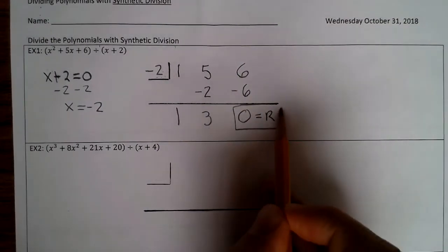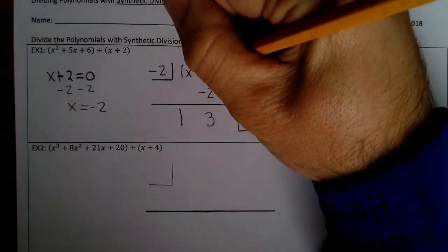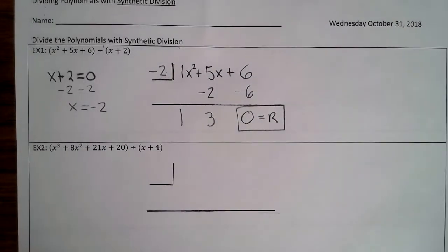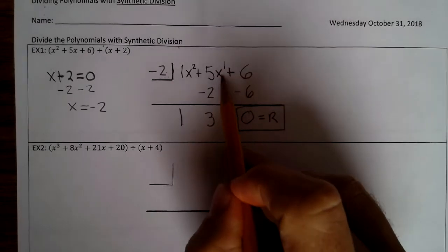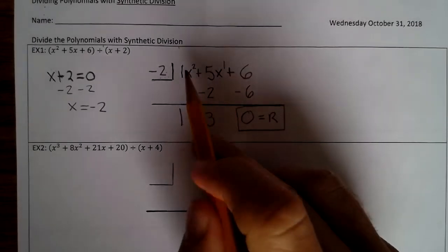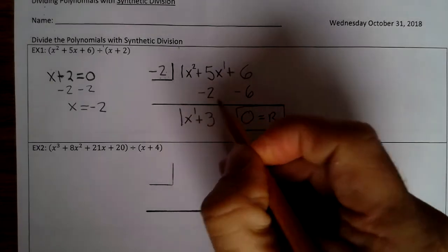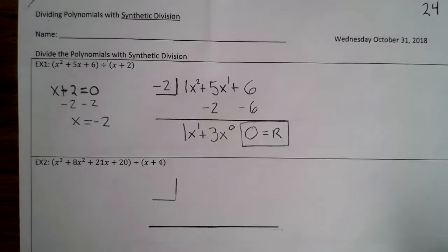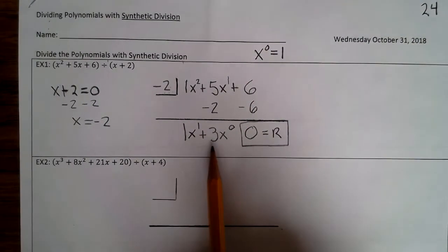Now, this was 1x² + 5x + 6. When you divide, the exponents decrease. Now, this was 1. So x² decreases. So that becomes just x to the first power plus 3. And 1 decreases to just x to the 0. But x to the 0 equals 1. So you really, in essence, don't need to write this. Okay?